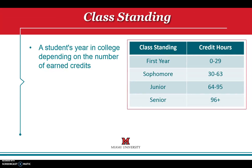Class standing is a student's year in college depending on the number of credits earned. A first-year student has 0 to 29 earned credit hours. A sophomore has 30 to 63 earned credit hours. Students who have 64 to 95 earned credit hours are known as juniors, and students with 96 or more credit hours are referred to as seniors.